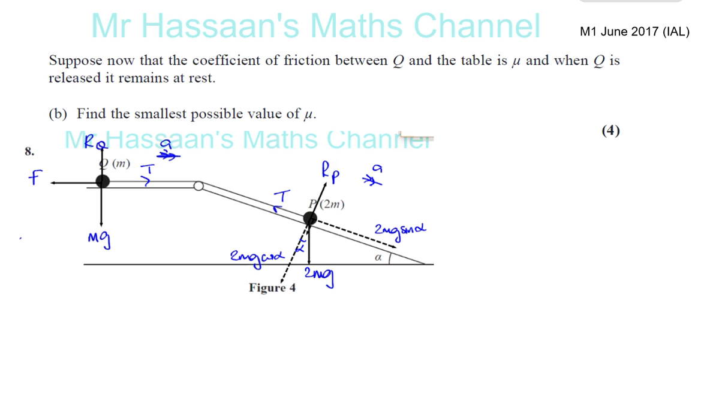Okay, so part B of question number 8 from June 2017 M1 IAL paper. Part B says, suppose now that the coefficient of friction between Q and the table is mu, and when Q is released, it remains at rest. Find the smallest possible value of mu.